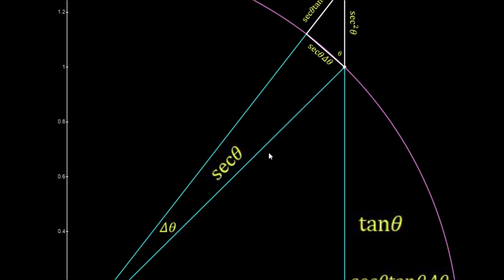So this length here is sec theta, and whenever we add on this little angle delta theta, which tends towards 0, then we're adding on this little length here.